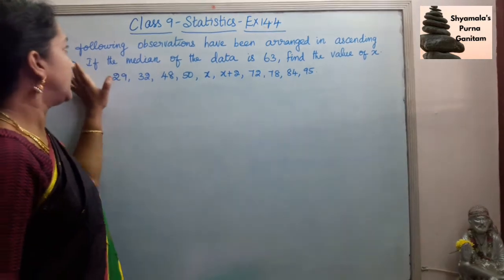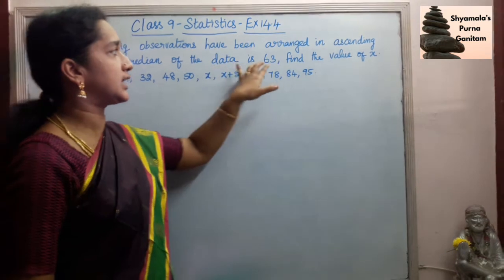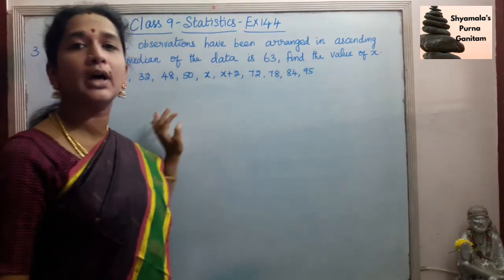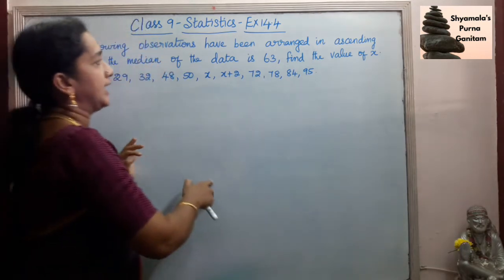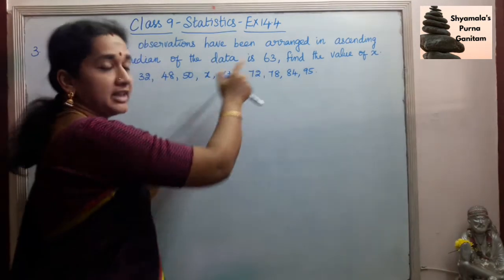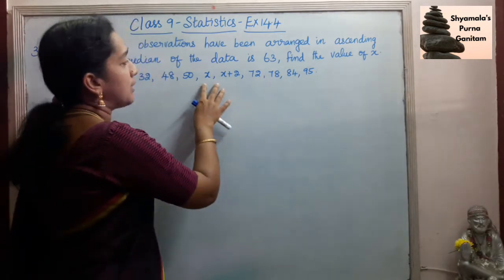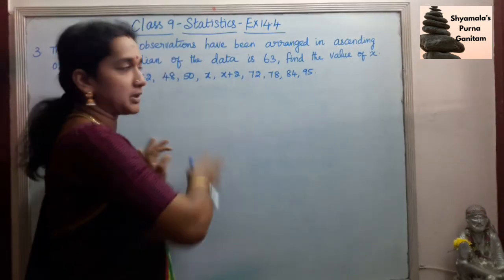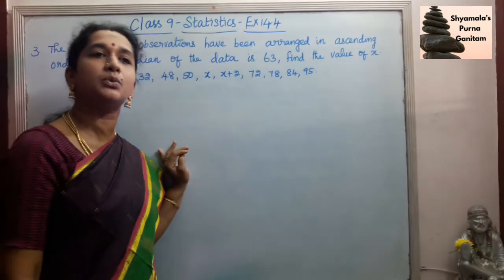Third sum: The following observations have been arranged in ascending order. If the median of the data is 63, find the value of x. So for this given data, median is given as 63. Two numbers are missing here: x and x plus 2. Find the value of x. So we are asked to find the value of x.